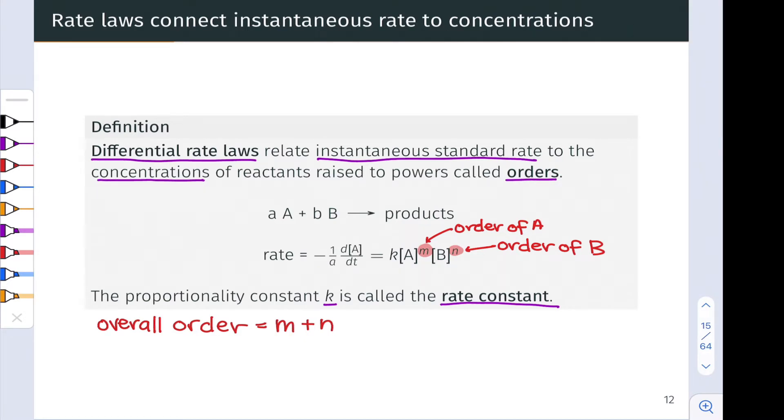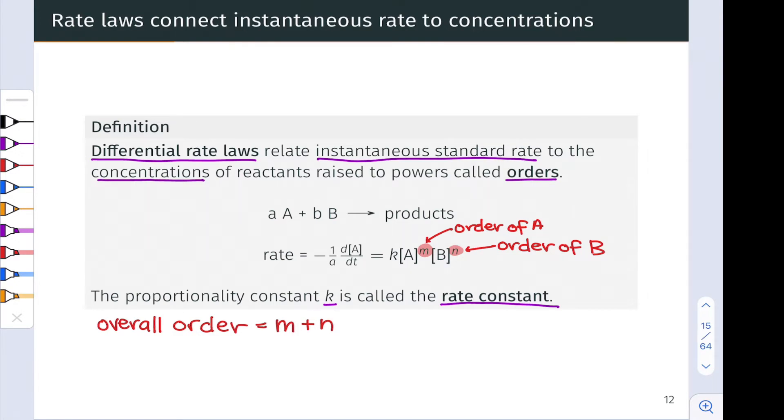In practice, kinetic orders can have any value: decimal, whole number, positive, or negative. But the most important values for our purposes will be positive integers, specifically the positive integers 0, 1, or 2.